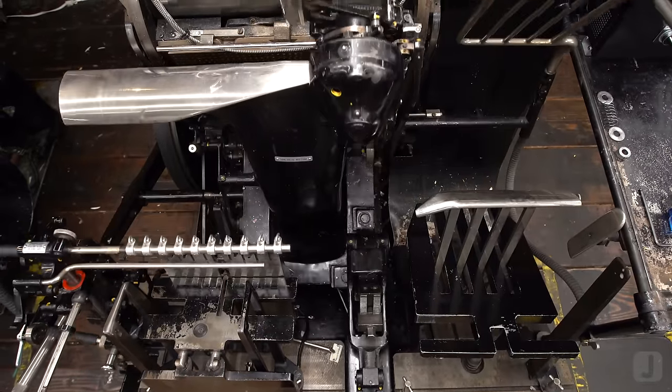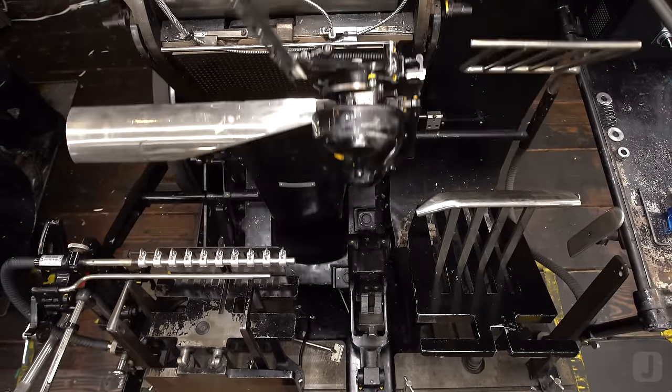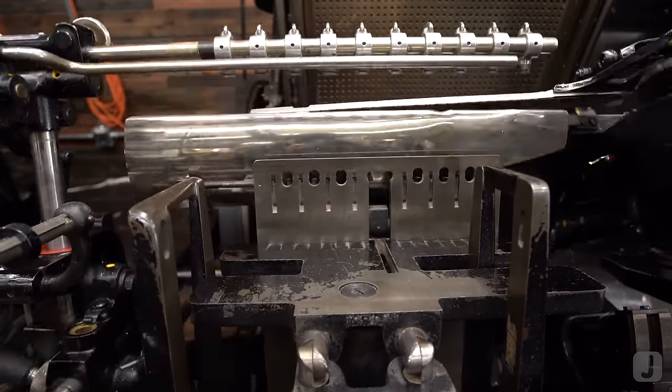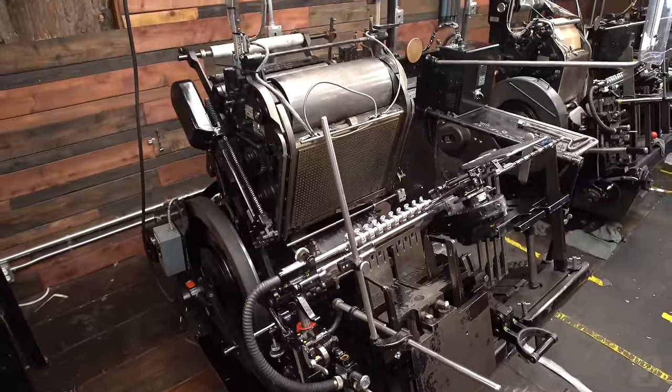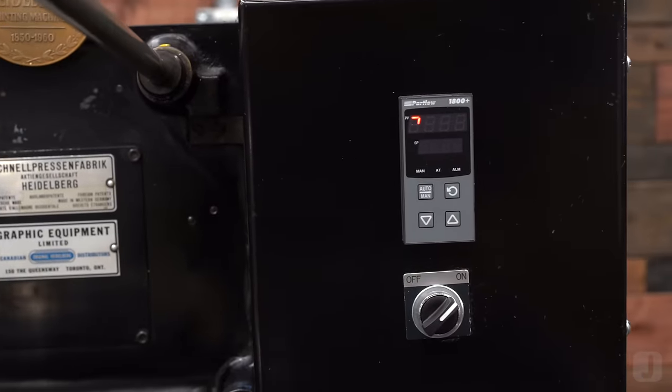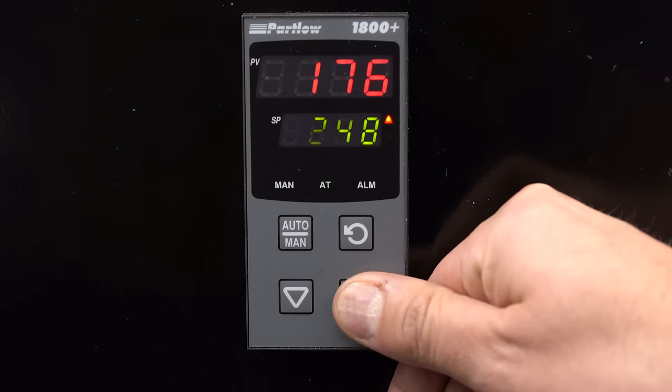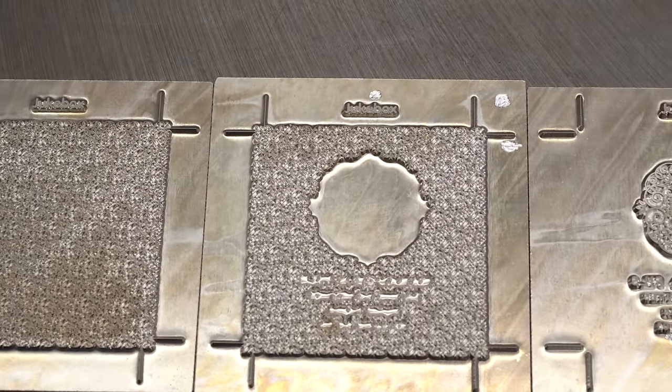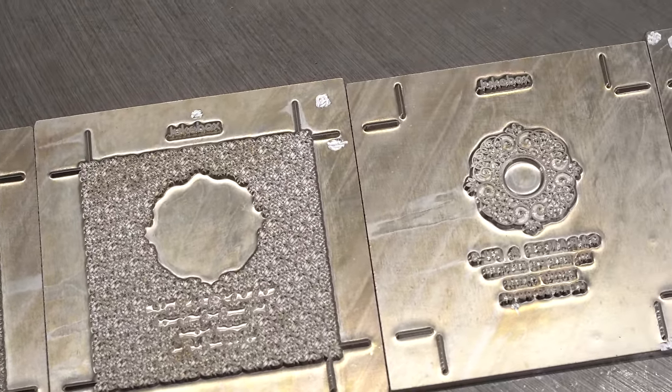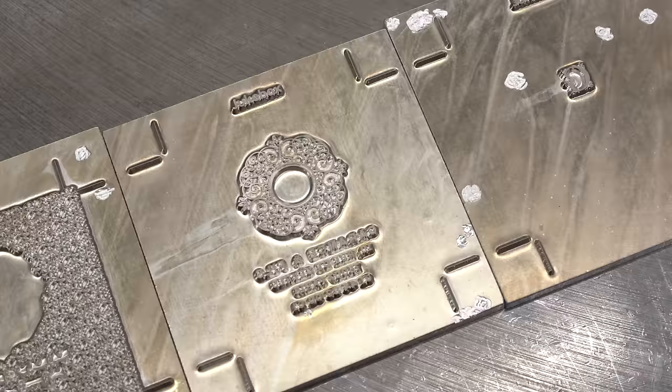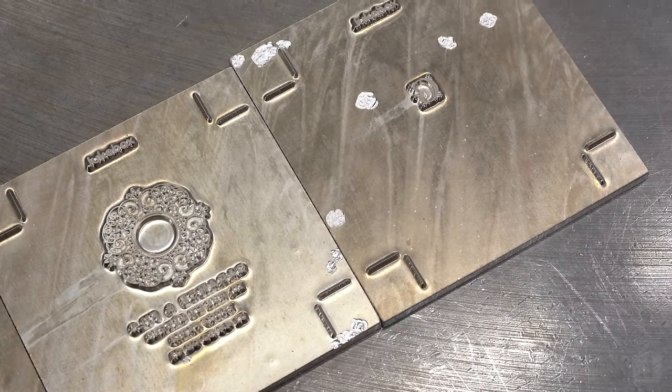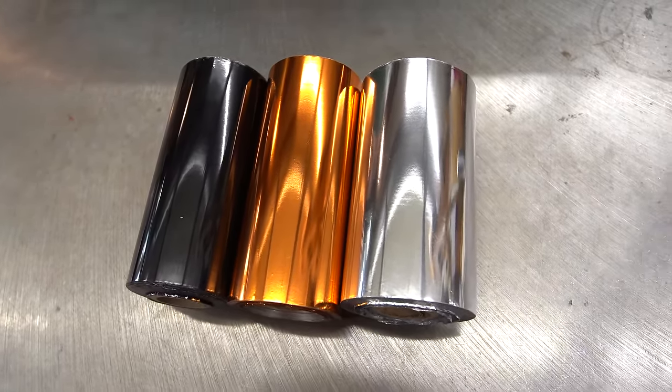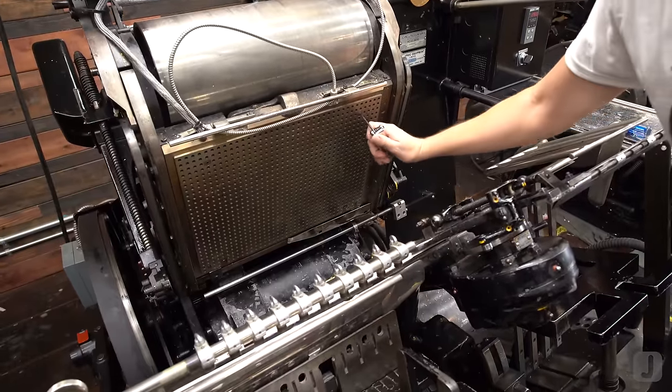We'll be using this press to make a business card using three foil colors on the front, one foil color on the back, then finishing it all off with a die cut and a metallic foil edge. Let's start off by turning on the heat for our base. 250 degrees is a good starting temperature as most foils work best around this temp. Here's a look at the four magnesium dies we'll be using today, one for the back and three for the front. These are the three foil colors we'll be using: gloss black, metallic copper and metallic silver.